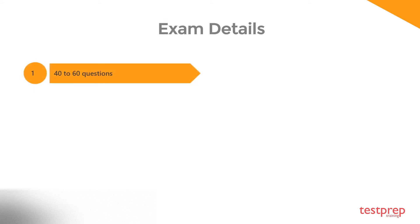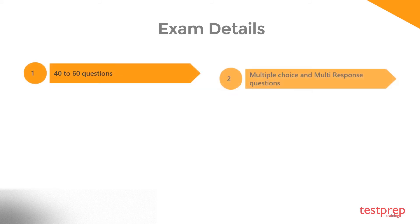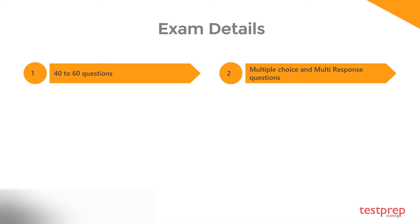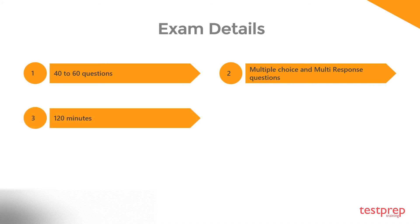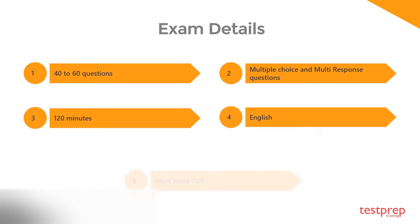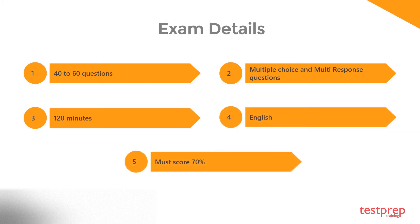Exam details: The Microsoft Information Protection Administrator exam covers 40 to 60 questions in multiple-choice and multi-response format. The candidate will get 120 minutes to complete the exam. It is available in the English language only, and candidates must score 70% to achieve this certification.